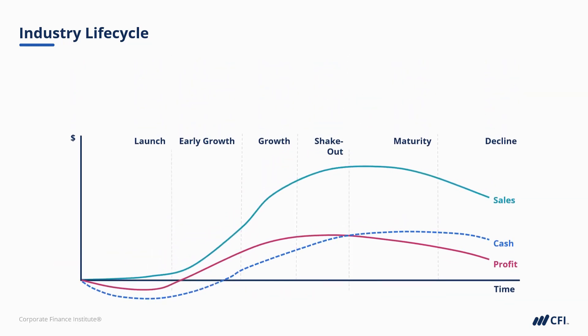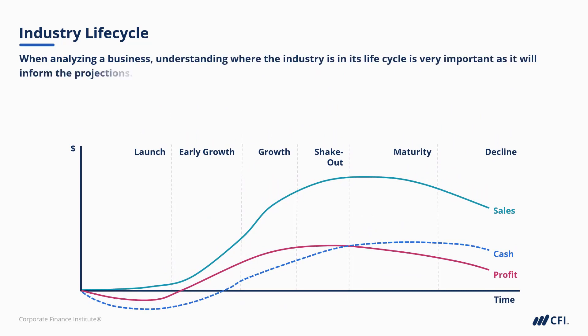When analyzing a business, understanding where the industry is in its life cycle — or rather, trying your best to predict it — is really important, since this too will inform your projections. A company operating in an industry that's in decline should not be projecting significant organic revenue growth, for example. However, that same business should be making considerably less investment in R&D or in capital assets than it would if operating in a growth industry. So cash flow could still be strong and relatively predictable. Industry research providers will typically include information and data in their reports to support your assessment of an industry's life cycle stage.